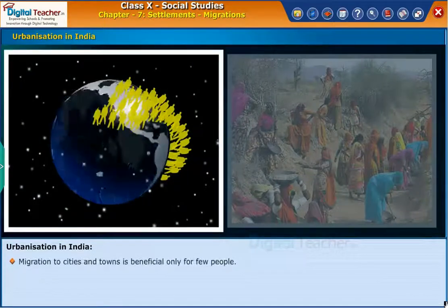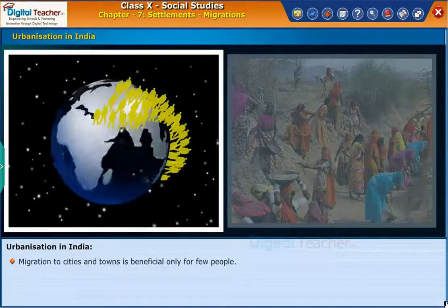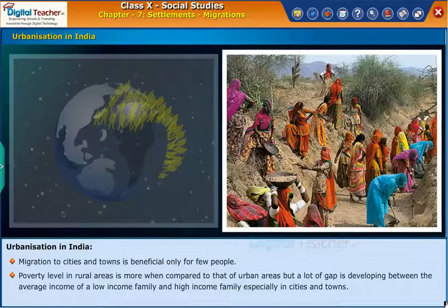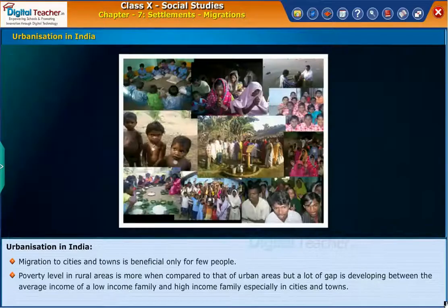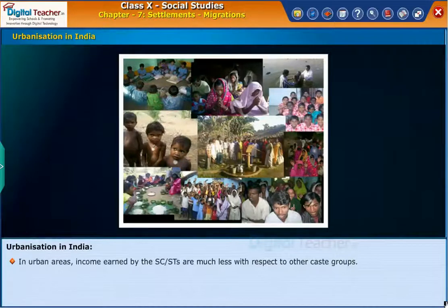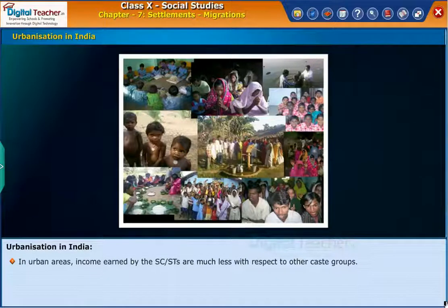Migration to cities and towns is beneficial only for few people. Poverty level in rural areas is more when compared to that of urban areas, but a lot of gap is developing between the average income of a low-income family and a high-income family, especially in cities and towns. In urban areas, income earned by the SC and ST communities is much less with respect to other caste groups.